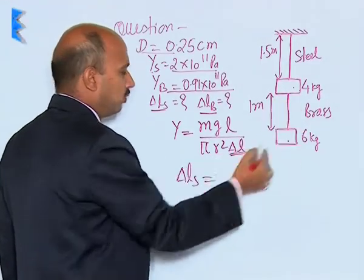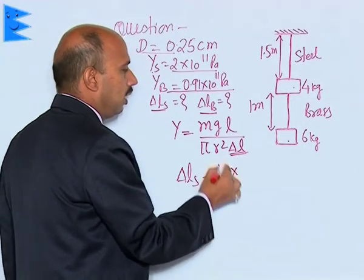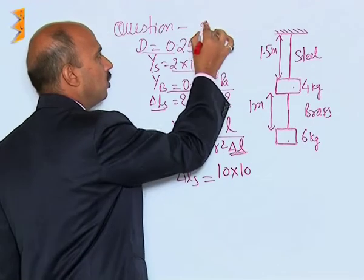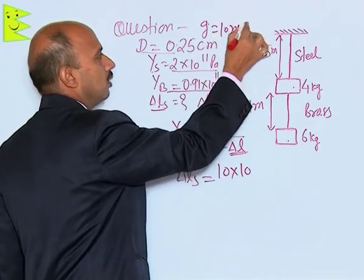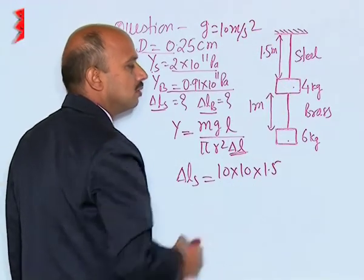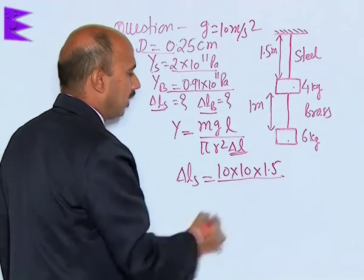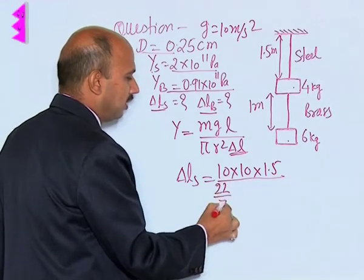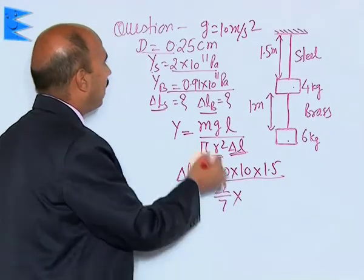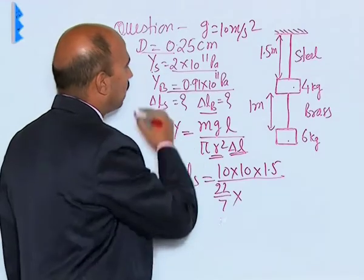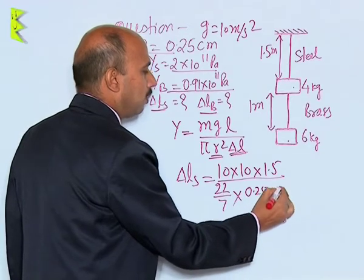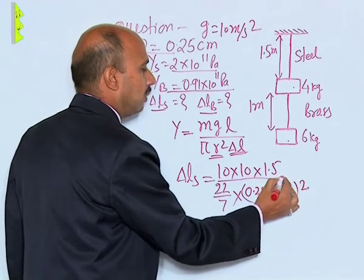We can write 6 + 4 = 10, times g which is 10 m/s². L is 1.5 meters divided by π (22/7). For radius we can write half the diameter, so 0.25×10^-2 meters after converting to SI units.